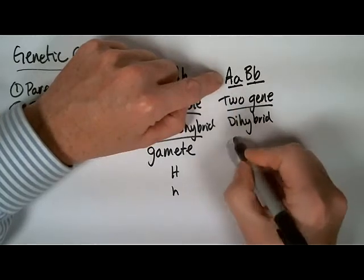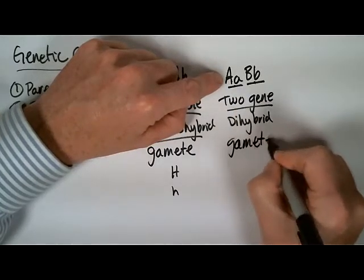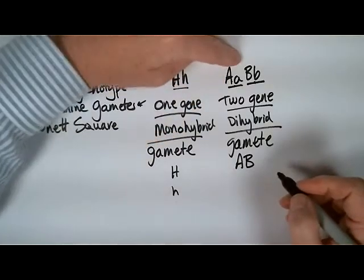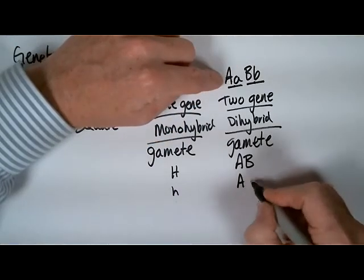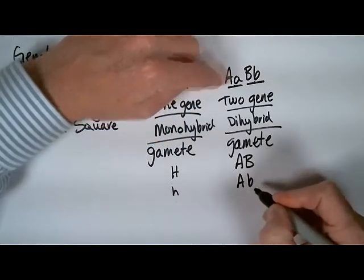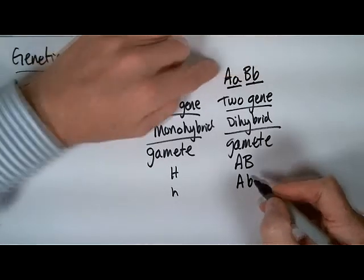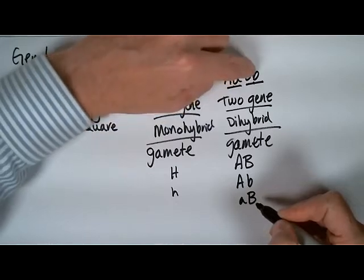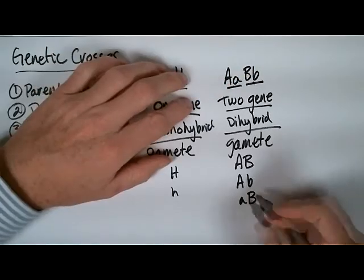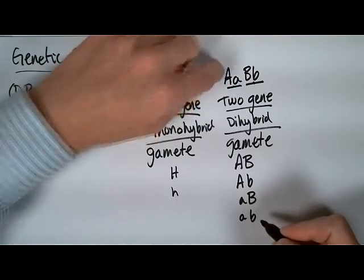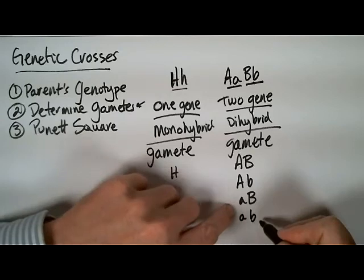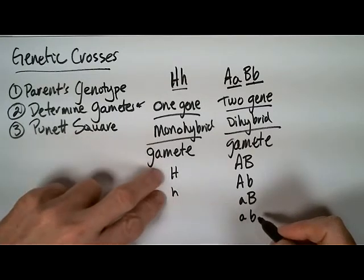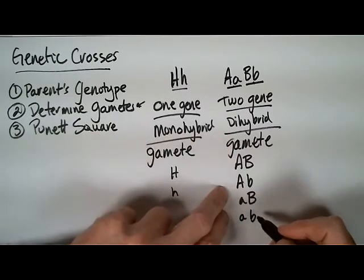The gametes would be: big A, big B — one from each; big A, little b — one from each; little a, big B — one from each; and little a, little b — one from each. There are four possible gametes here for this dihybrid individual, compared to only two for a monohybrid.